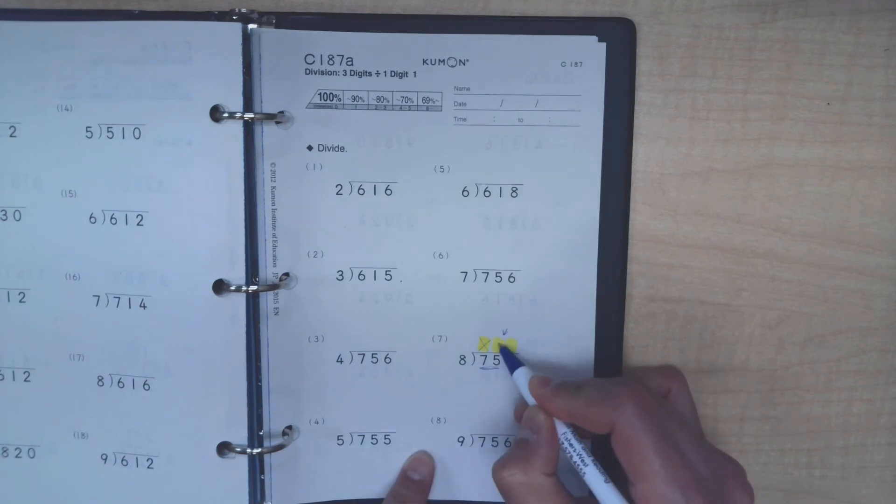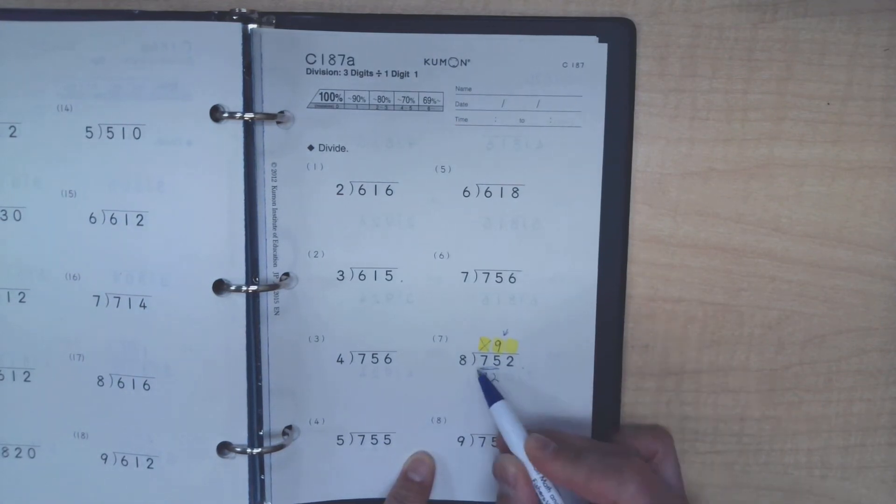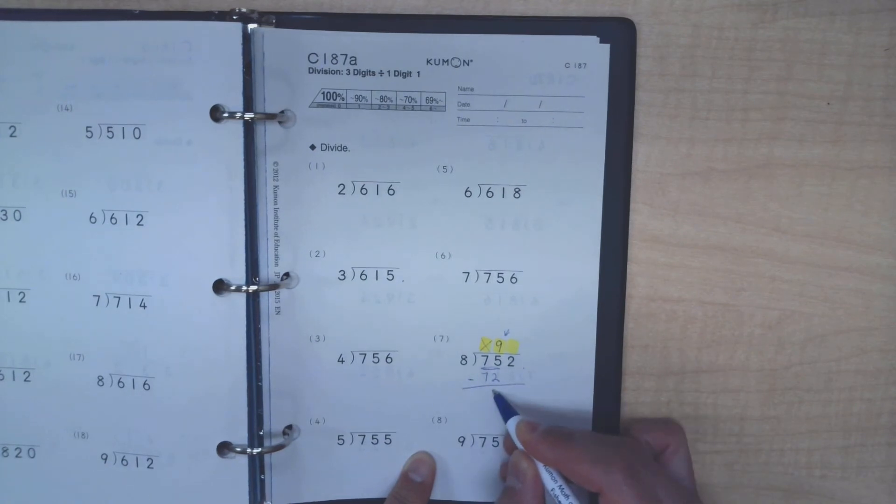We know that 8 times 9 is 72, which is really close to 75 but it doesn't go over it. Our next step is to subtract the 72 that we got from multiplying 8 times 9, and the answer there is 3.